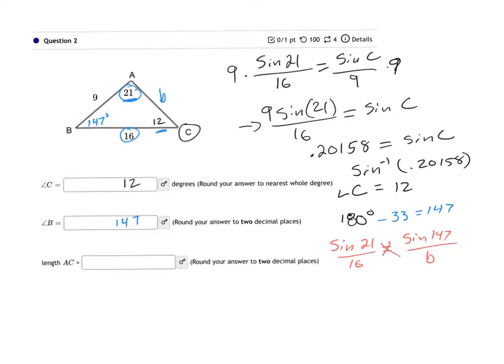When you cross multiply, you're going to end up with B times the sine of 21 is equal to 16 times the sine of 147. Then you divide by the sine of 21, divide by the sine of 21.